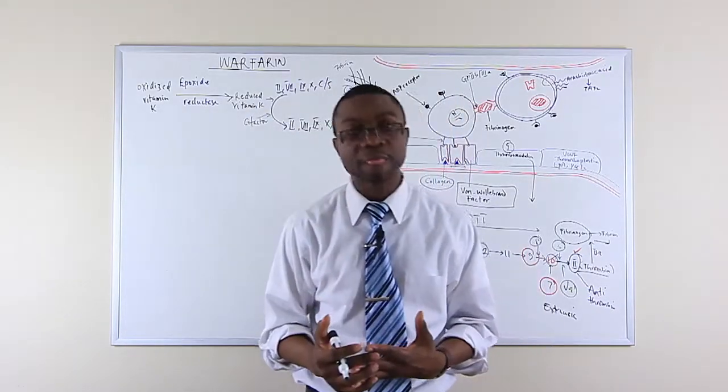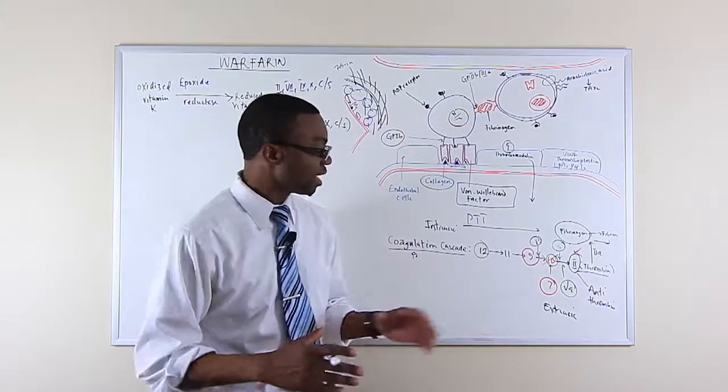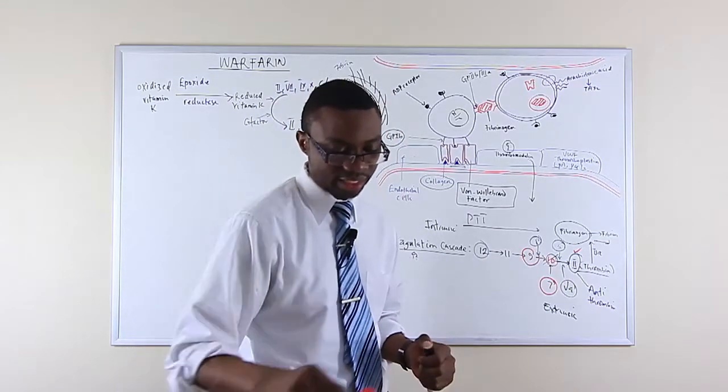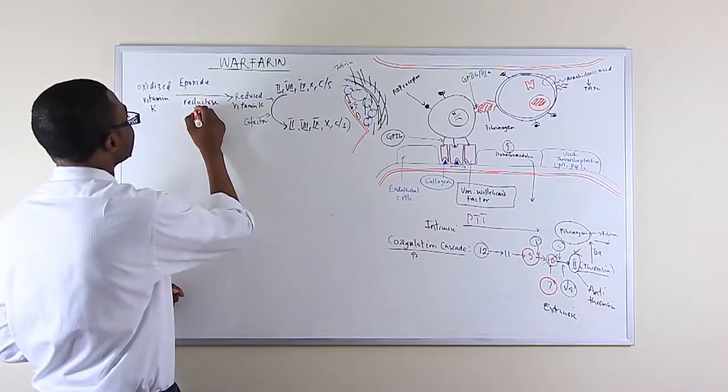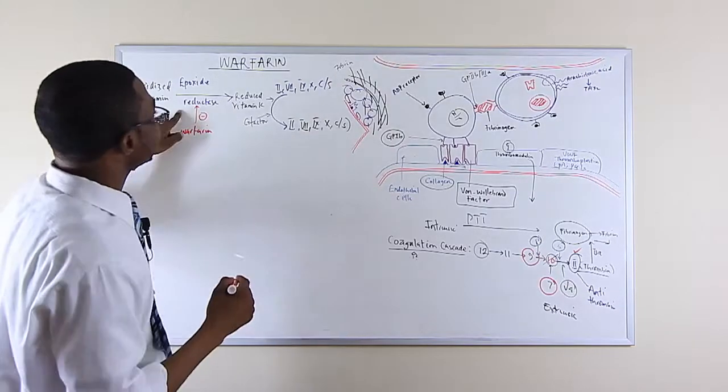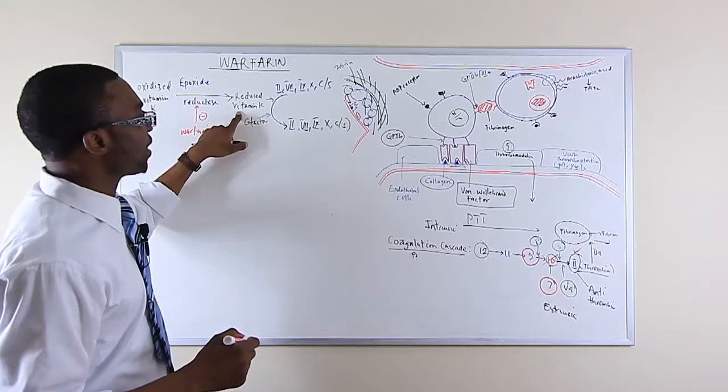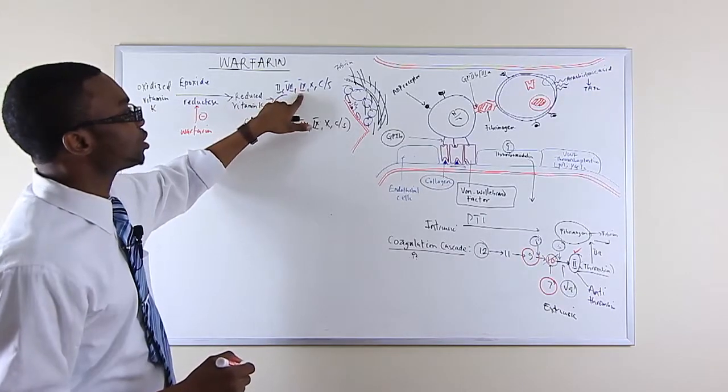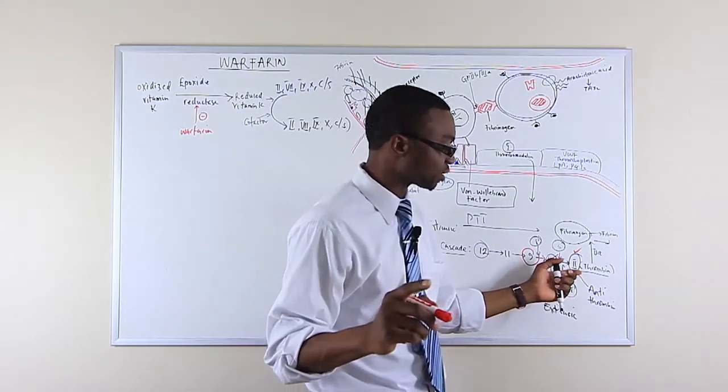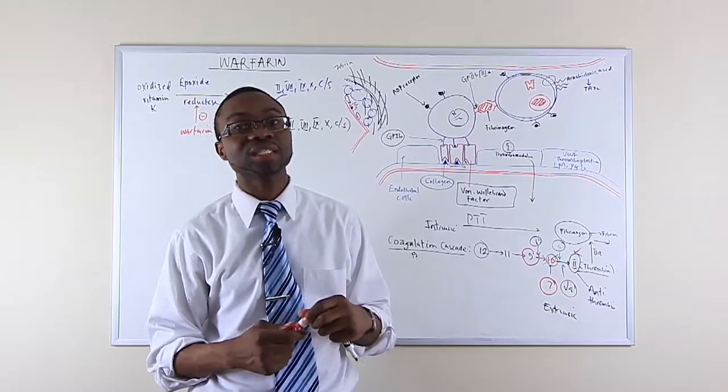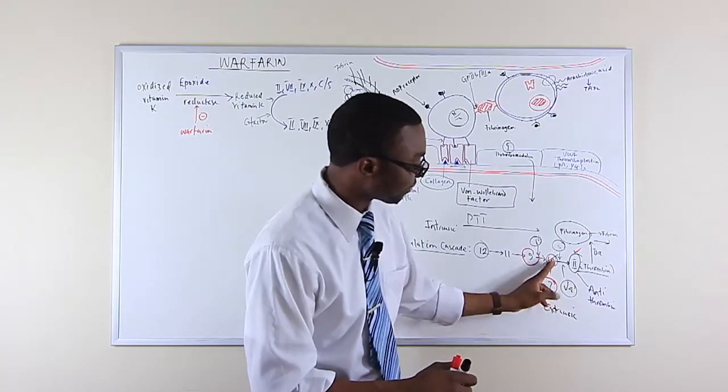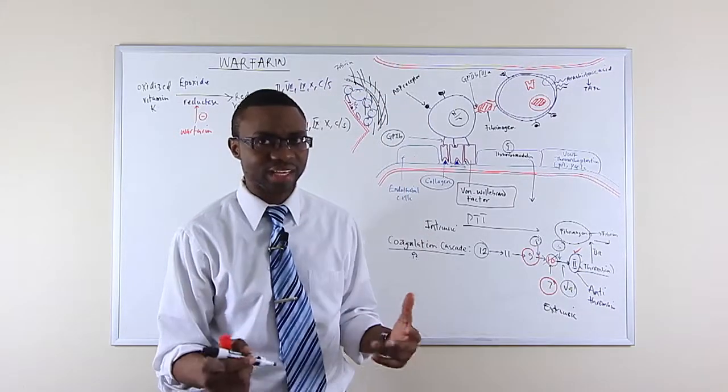Where warfarin kicks in is warfarin is going to inhibit epoxide reductase. When warfarin inhibits that, we don't have a reduced form of vitamin K to act as a cofactor to convert these immature cofactors into mature cofactors, which means if we don't have factor 7, factor 9, factor 10, and factor 2, the extrinsic pathway is not going to function. Although factor 9 is not part of the extrinsic pathway, as you can see, factor 7, factor 10, and factor 2 are all part of the cofactors in the extrinsic pathway.